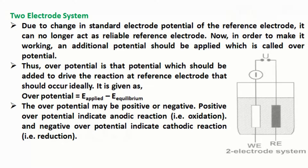Over-potential is that potential which should be added to drive the reaction at the reference electrode that should occur ideally. It is given as: Over-potential = Applied potential − Equilibrium potential. The over-potential may be positive or negative. Positive over-potential indicates an anodic reaction, that is oxidation, and negative over-potential indicates a cathodic reaction, that is reduction.